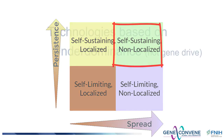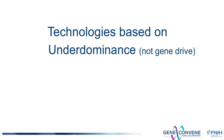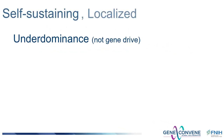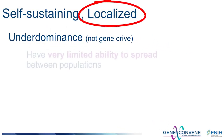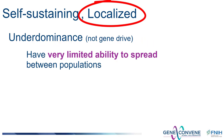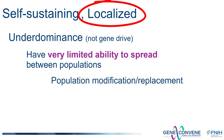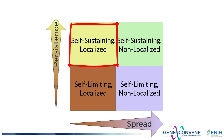There's an interesting class of technologies based on the genetic phenomenon of underdominance that are self-sustaining but with limited spreading potential. These technologies are being developed for population modification applications, and because of their inherent inability to spread easily to new populations, they are attractive for some applications. These technologies would be placed in the self-sustaining and localizing quadrant of the technology space.